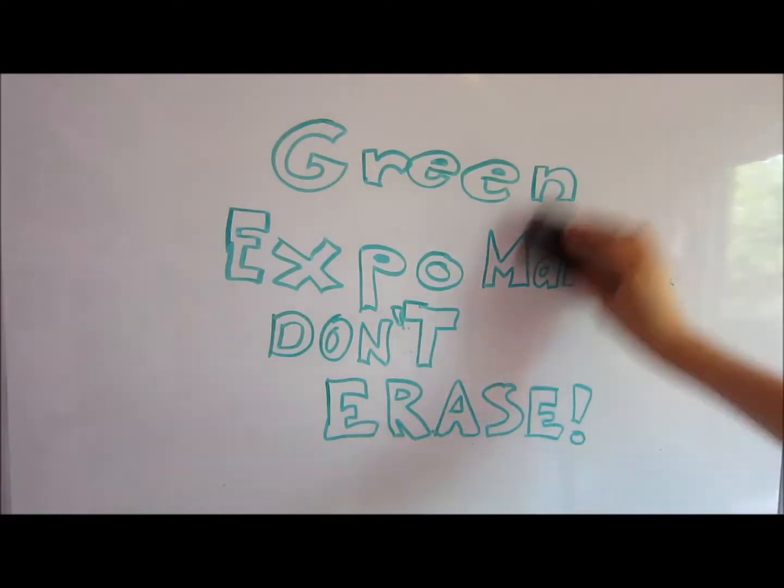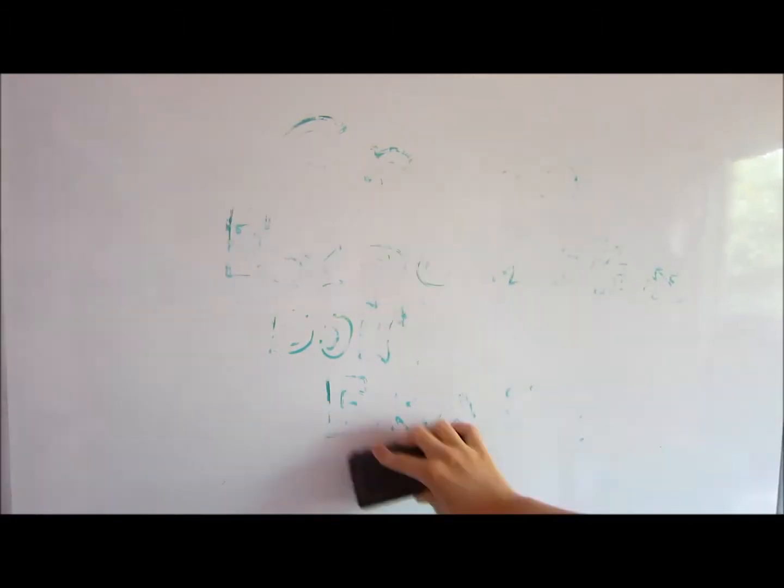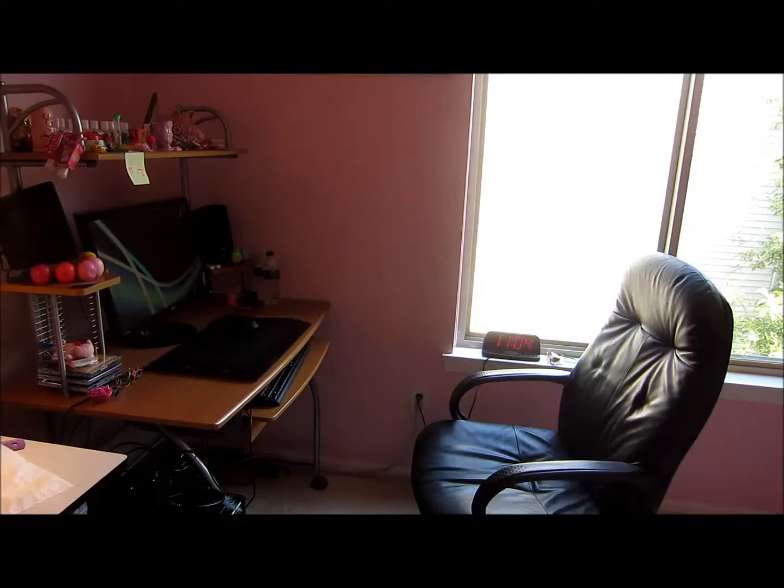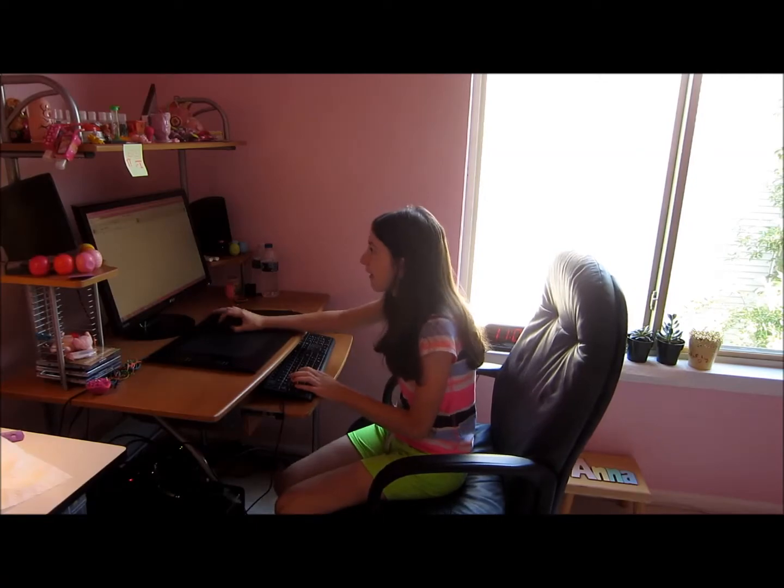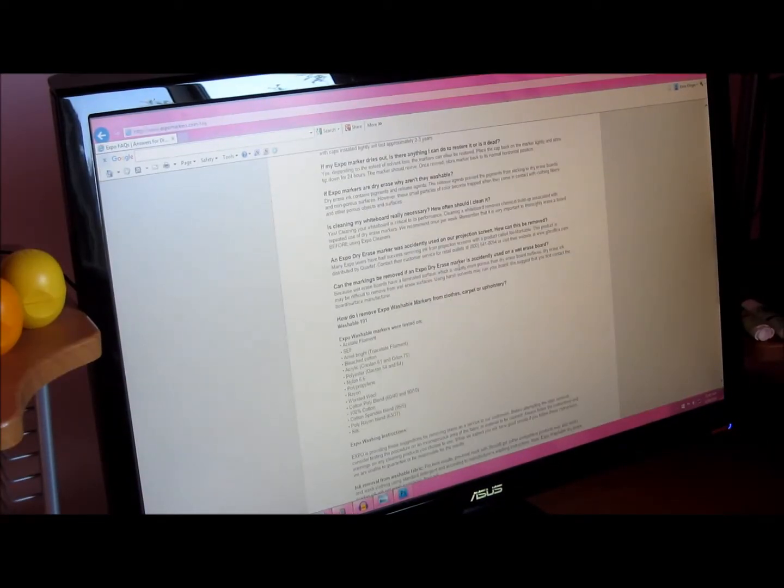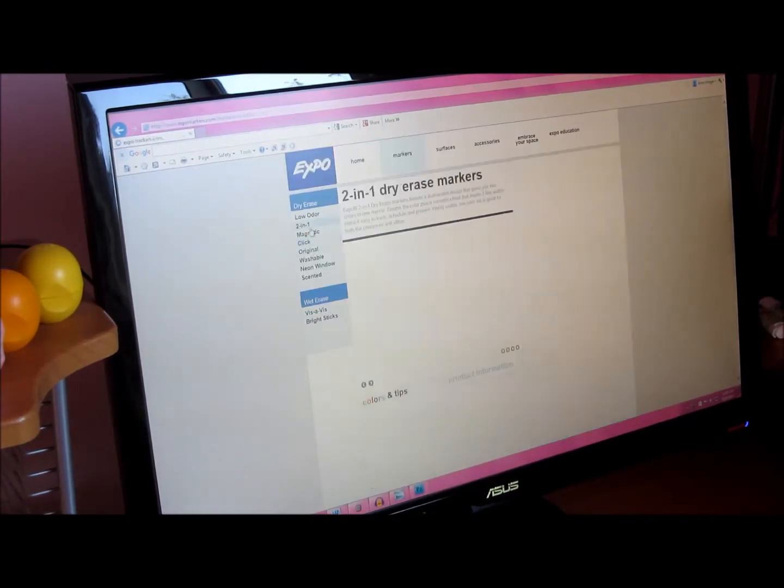The first step is to ask a question. Do green markers erase as well as the other markers? Well, no, but before we jump to conclusions, let's do some research and experiment. When I was researching, I didn't find anyone else with this problem, so maybe my markers are just bad. After a while, I started getting sidetracked. They make magnetic expo markers? What was I talking about again? Oh yeah.